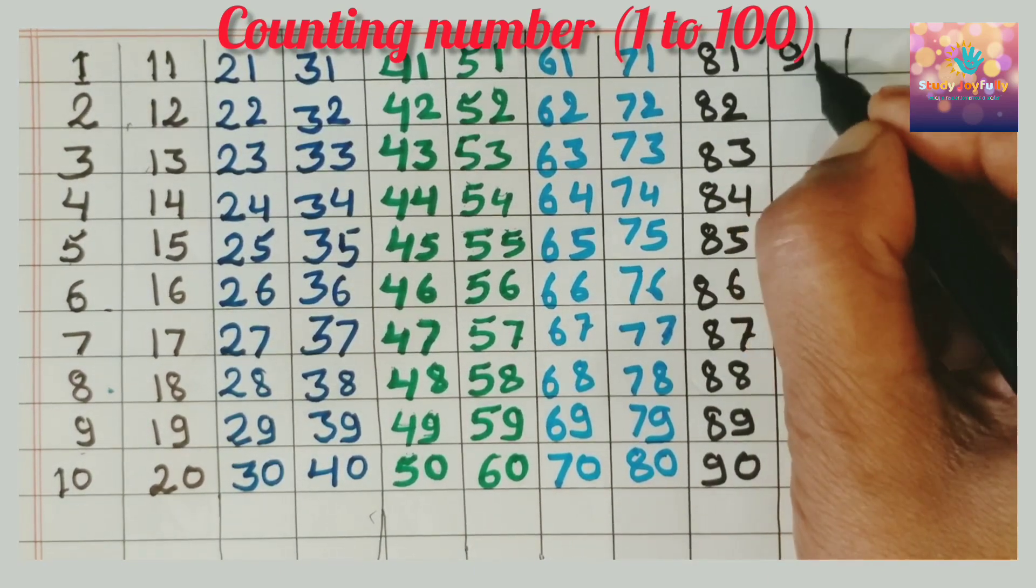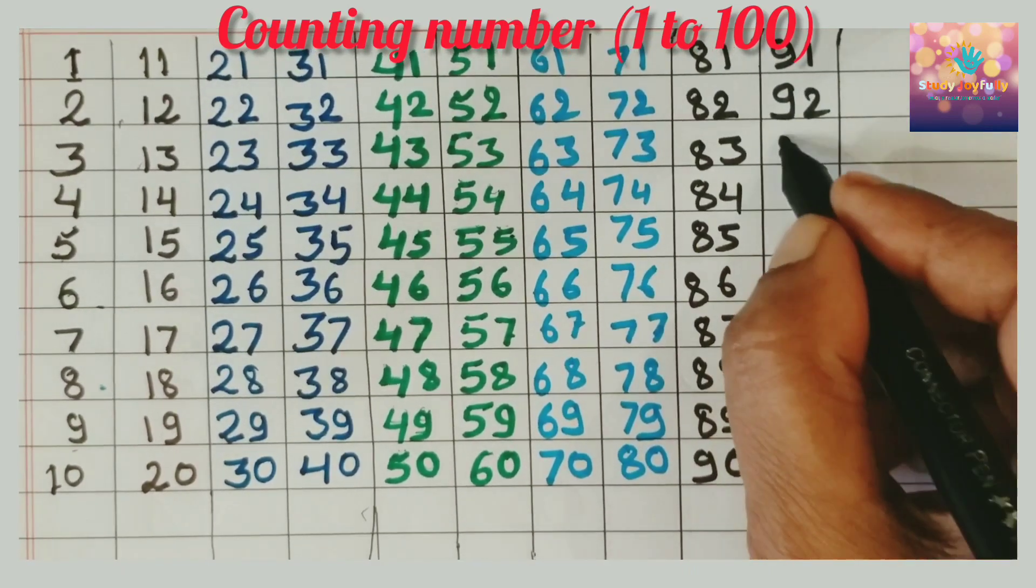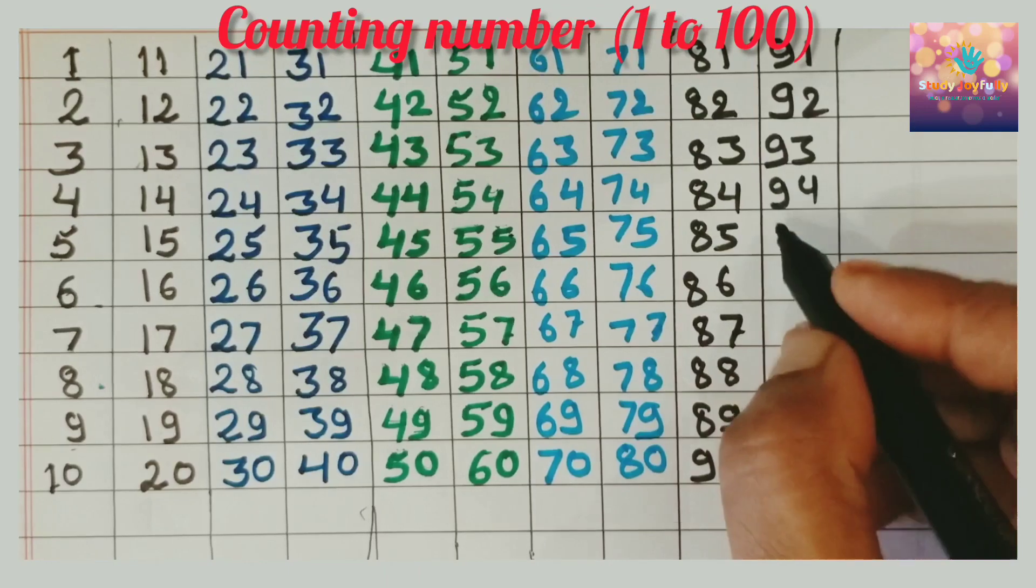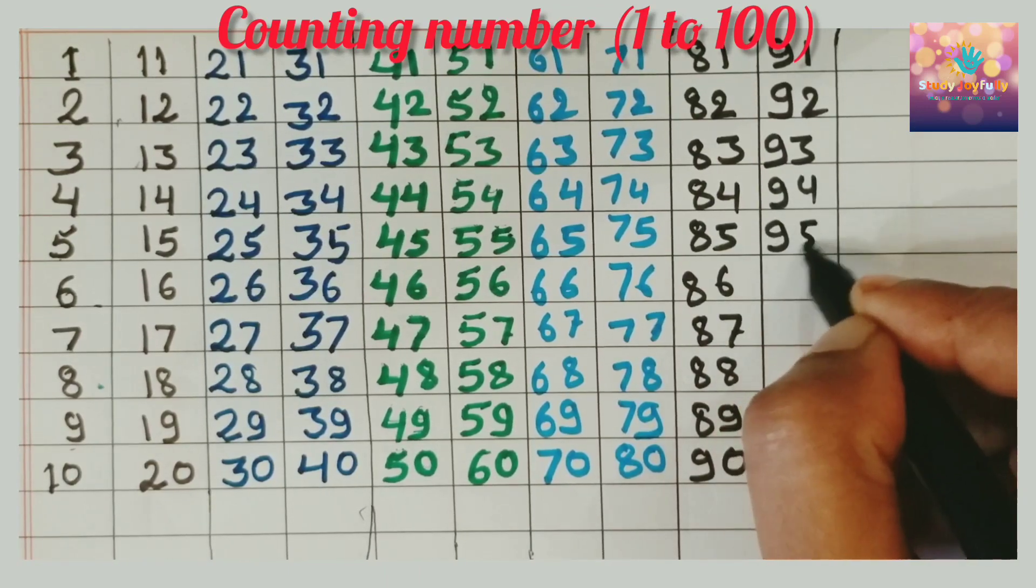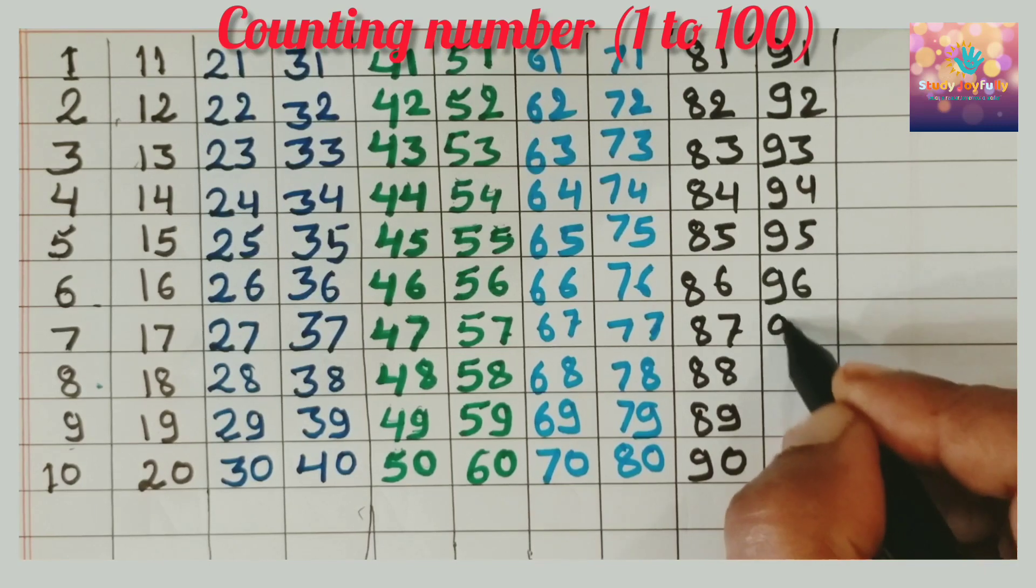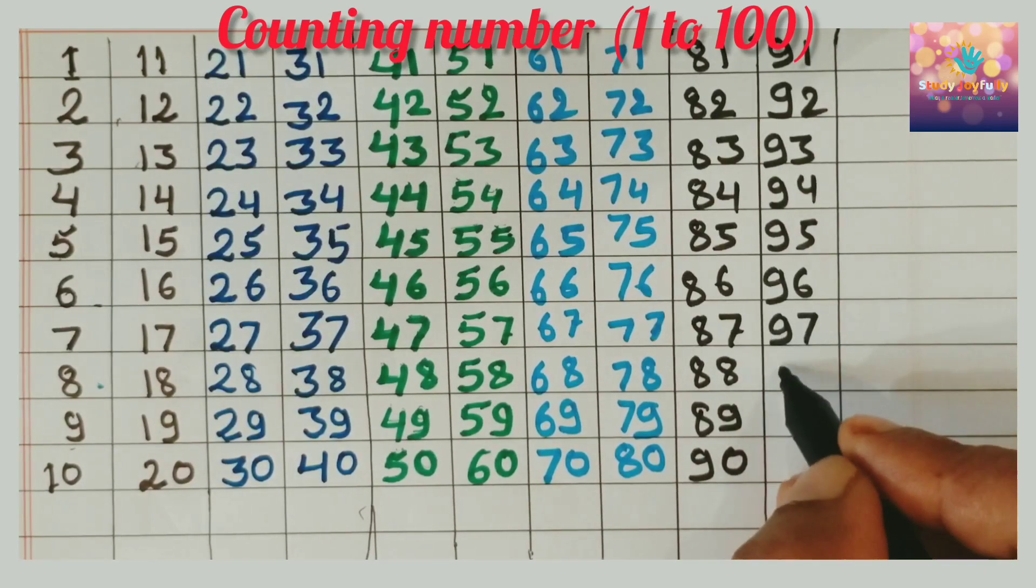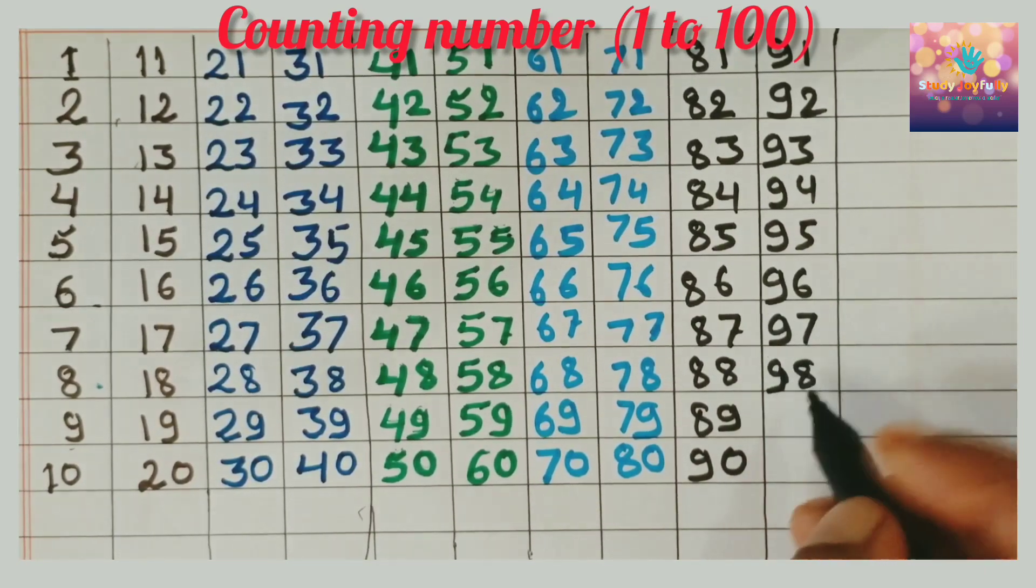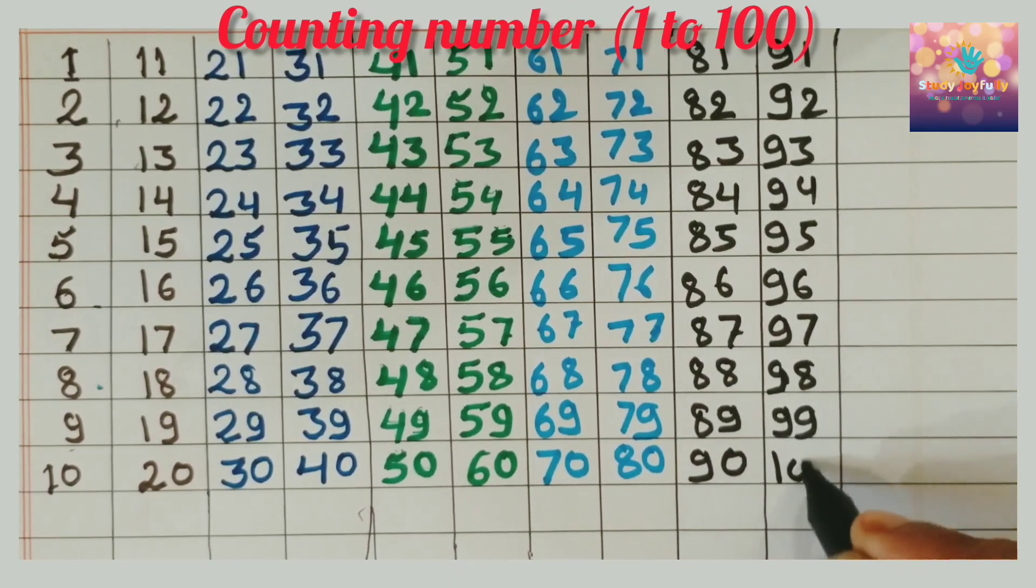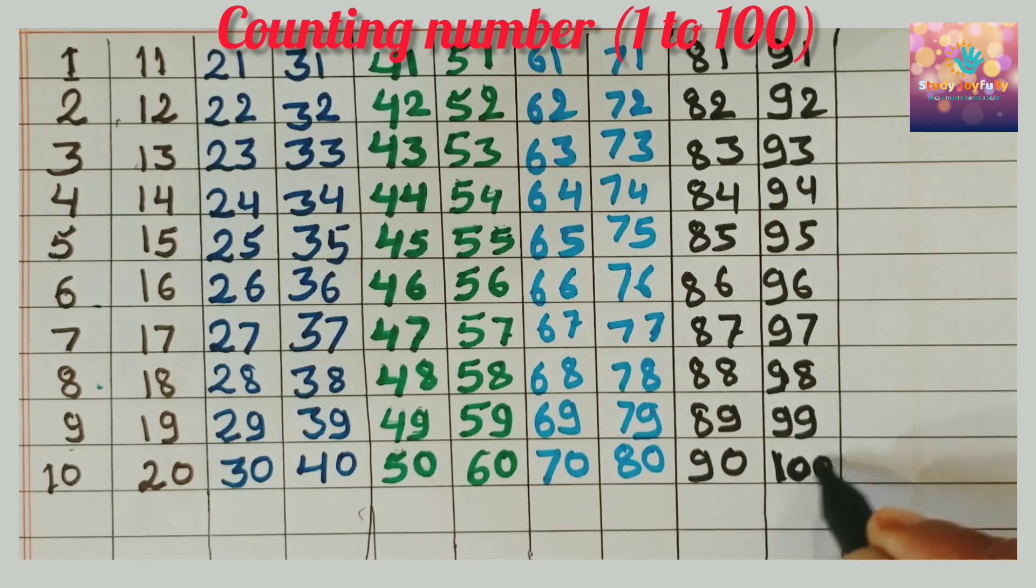9, 1, 91. 9, 2, 92. 9, 3, 93. 9, 4, 94. 9, 5, 95. 9, 6, 96. 9, 7, 97. 9, 8, 98. 9, 9, 99. 1, 0, 0, 100.